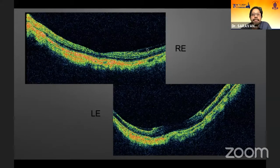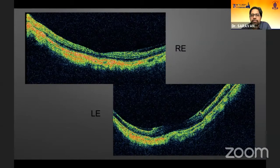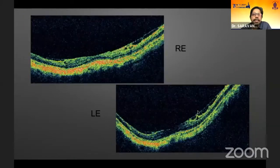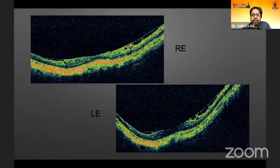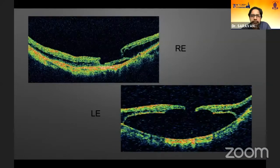You can see here the early taut posterior hyaloid. And here you can see the early effects of the traction on the retina. In the top picture you can see the early schitic changes, which are increasing. You are seeing a significant amount of myopic macular schisis in the top picture. And the bottom picture shows a posterior pole RD with myopic schisis and a large macular hole as well.